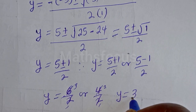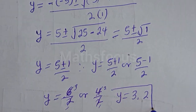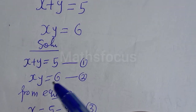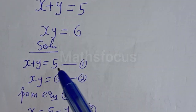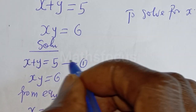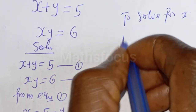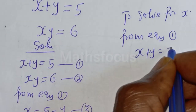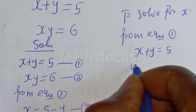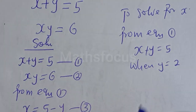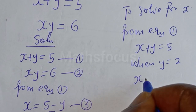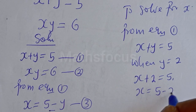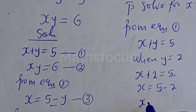So Y is equal to 3 or 2. Now let's solve for S since we know the value of Y. We can solve for S using either equation 1 or equation 2, but in this case I am going to use equation 1. From equation 1, S plus Y is equal to 5. When Y is equal to 2, we have S plus 2 is equal to 5, so S is equal to 5 minus 2, which gives S is equal to 3.